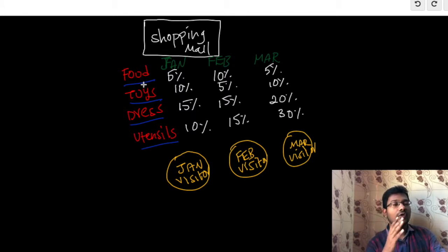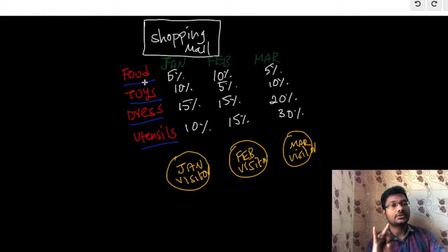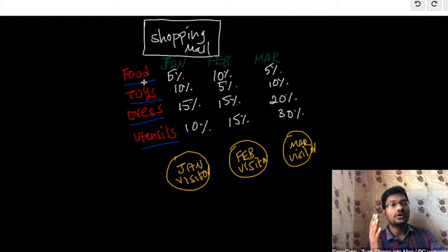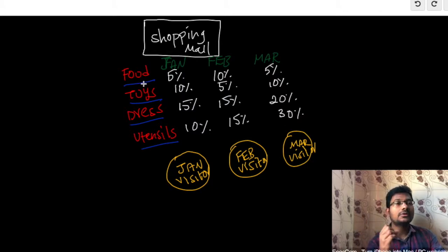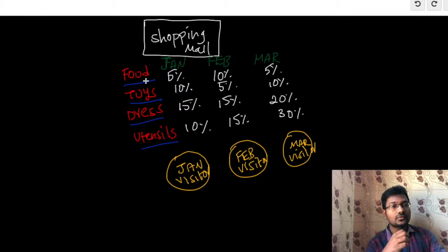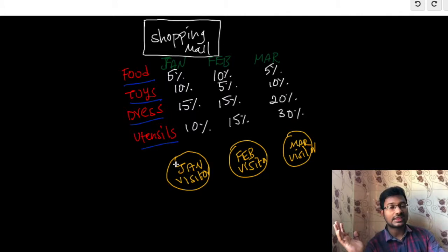We can consider another scenario where the visitor design pattern plays a major role in real life. For example, if you are conducting three types of functions — marriage, birthday, and wedding anniversary — you are inviting friends and relatives. Here the relatives and friends are the visitors. They will buy gifts based on the function type: for a birthday they buy toys and chocolates, for a wedding anniversary they buy jewelry or a bouquet. So visitors are determining and buying gifts based on the function type.